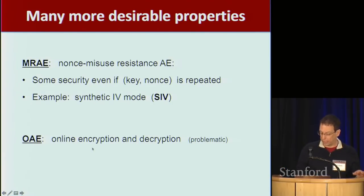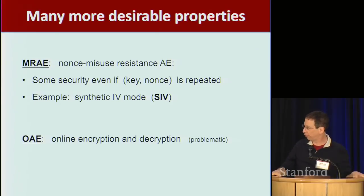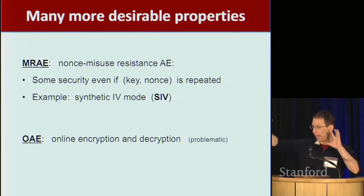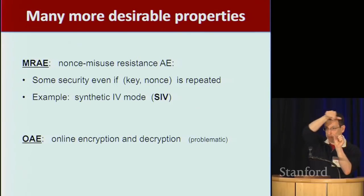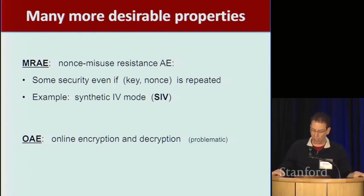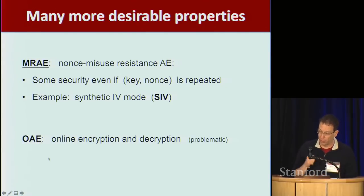There's a very famous mode called synthetic IV mode, SIV, which actually achieves misuse resistance. You might also want something like online authenticated encryption, where you can decrypt blocks of ciphertext and release blocks one by one before you've seen the entire ciphertext. Normally you'd collect the entire packet and decrypt it as a whole, but in many cases you'd like to release packets as they come in rather than waiting for the entire block. This is called online authenticated encryption — a little problematic to define, but we have ways of doing that.